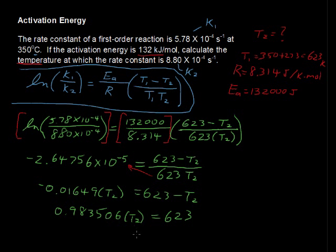Equals 623. Divide each side by this coefficient, and you get T sub 2 equals 633, I'm rounding now, 633 degrees Kelvin. Remember we were dealing in degrees Kelvin.